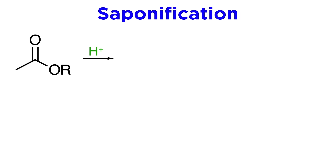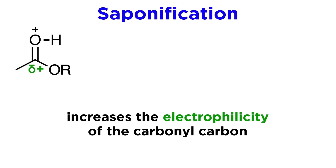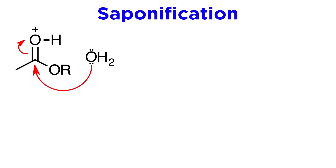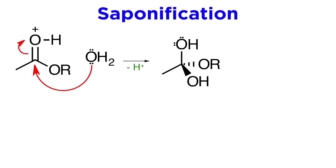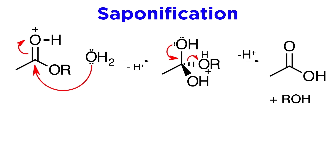When this occurs under acidic conditions, it's a bit different. First, the carbonyl will be protonated, which makes the carbonyl carbon significantly more electrophilic. Because of this, even a water molecule can attack, generating the alcohol. Then the alkoxy oxygen will be protonated, so the carbonyl can reform and kick off the alcohol.